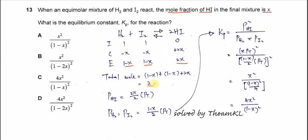Then you can get the partial pressure of the HI, H2 and I2. So how to calculate the partial pressure of HI. We need to use the mole fraction. Mole fraction is actually given here. The mole fraction of HI in the final mixture is X.